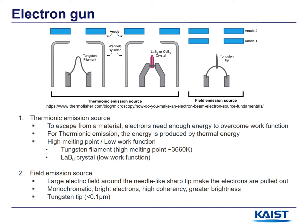Two materials are widely used for thermionic emission sources. One is the tungsten filament, which has a high melting point, and another is the lanthanum hexaboride crystal, which has a low work function. The principle of the field emission source is that a large electric field around a sharp tip pulls the electrons out, and the tungsten tip is widely used. It has some advantages compared to thermionic emission sources: monochromatic, bright electrons, high coherency, and greater brightness.